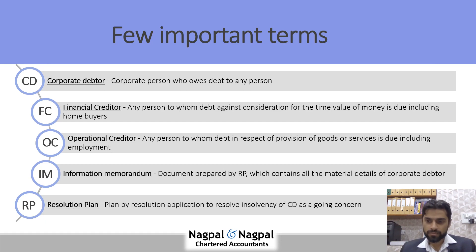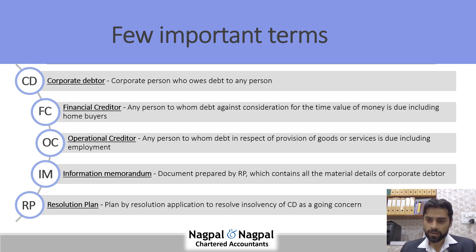Some other important terms before we proceed with the process — I will be using these terms during my presentation. Corporate Debtor is a company which is under insolvency. Financial Creditor is a person to whom debt against consideration for time value of money is due. This includes banks and financial institutions who have lent money to the corporate debtor, and also includes home buyers, as amended after the Supreme Court judgment. Operational Creditors are those to whom debt in respect of provision of goods or services is due — companies with which the corporate debtor normally deals during the course of business. Employees are also covered under the category of operational creditors.